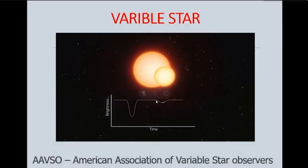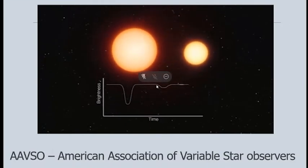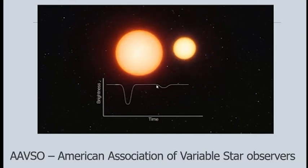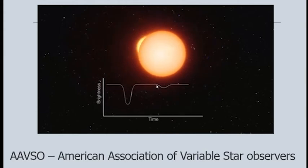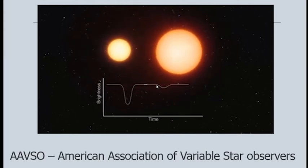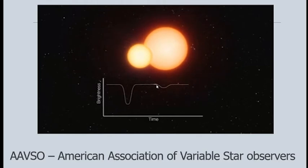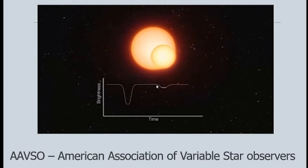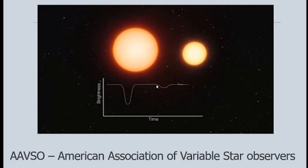You can take variable star observations and submit them to AAVSO — the American Association of Variable Star Observers. You have to observe minute by minute, record them, and send the report to the organization that looks after variable stars.